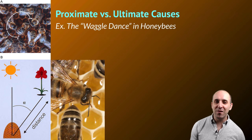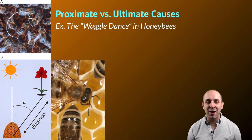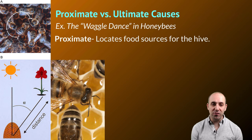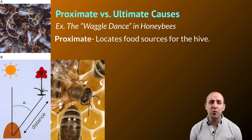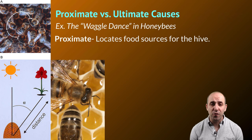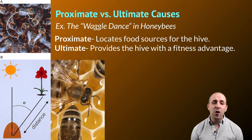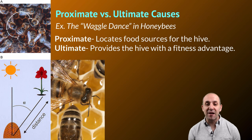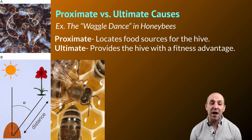Interestingly, this is often done in the dark, so the waggle dance information is not conveyed visually — it's conveyed by other members of the hive feeling the pattern of the waggles. It's useful when talking about behaviors to consider proximate and ultimate causes. Proximate causes relate to the short-term benefits of the behavior; in the case of the waggle dance, it locates the food source for the hive and enables the hive to survive. Ultimate causes refer to the evolutionary basis for the behavior — in most cases, the ultimate cause is that the behavior provides a fitness advantage to the hive.